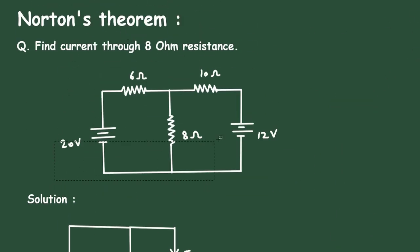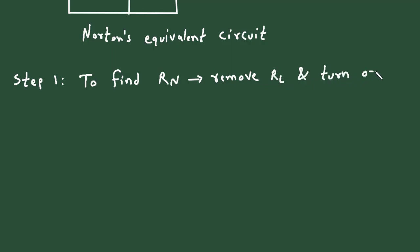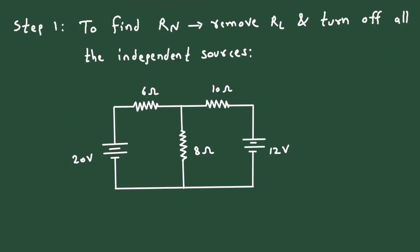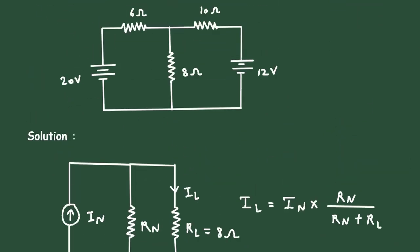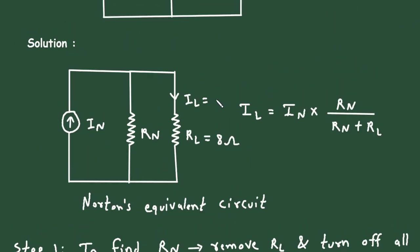Step number 1 is to find the value of Rn. The first step is to remove Rl and turn off all the independent sources. Here we can see this 8 ohm is the Rl, so Rl is equal to 8 ohm, because we have to find the current through this 8 ohm. This will be our Rl and the current will be Il — let's say the current is small i.